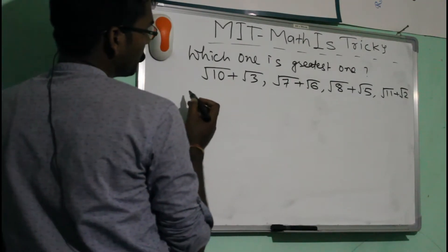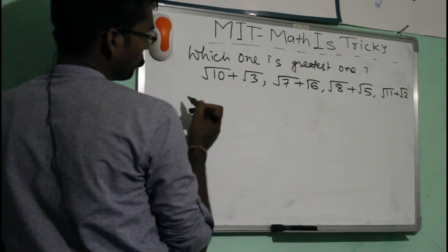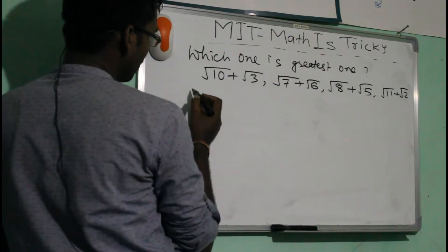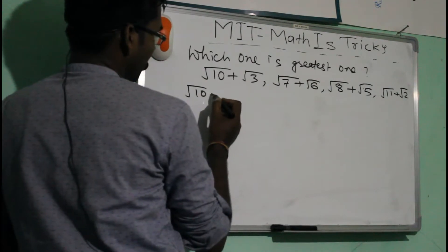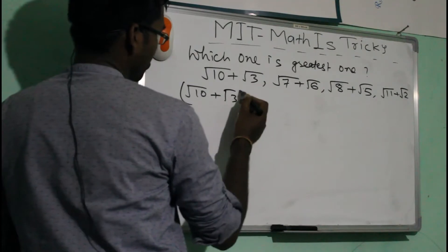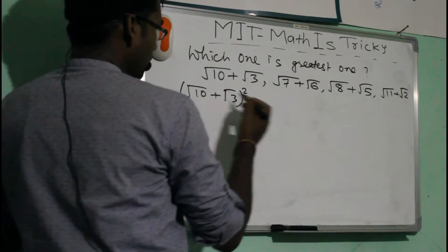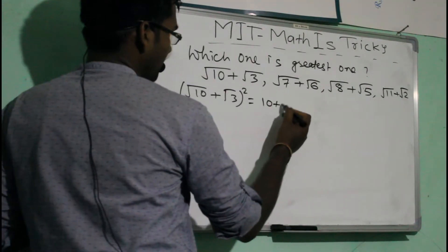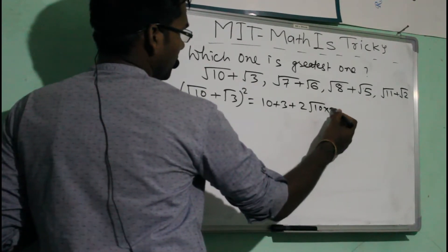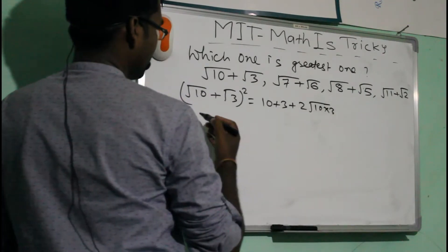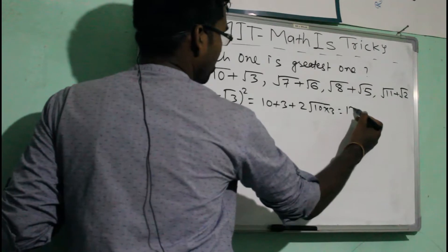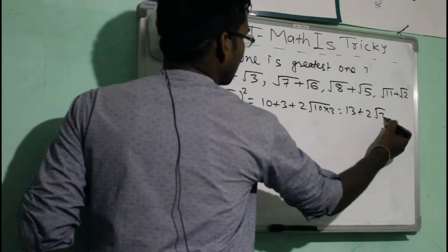Let me show you the process we are following. For the first expression, √10 + √3, we square it: (√10 + √3)² = 10 + 3 + 2×√10×√3, which gives us 13 + 2√30.